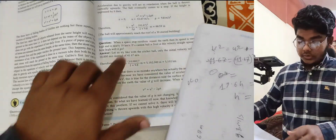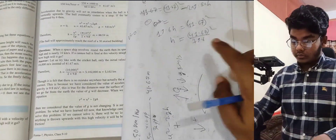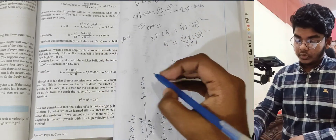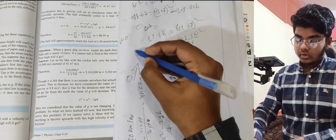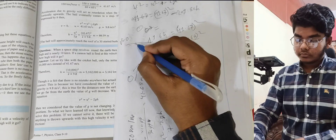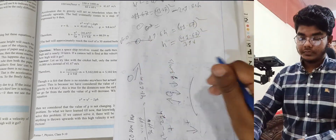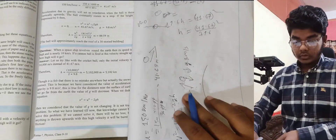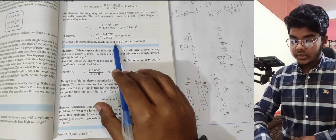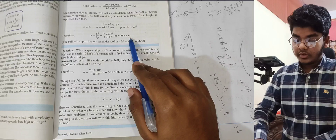Solving: h = (41.67)² ÷ (2 × 9.8) = 1736.39 ÷ 19.6 ≈ 88.59 meters. When you throw the ball, it goes up to approximately 88.59 meters.